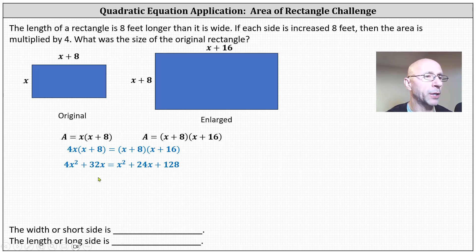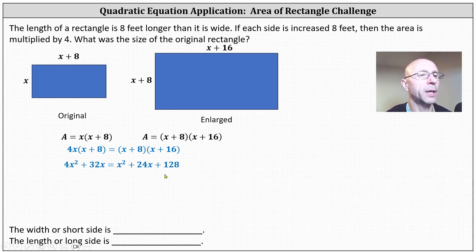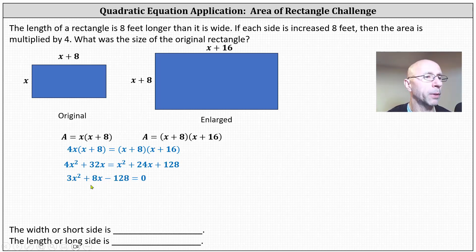Because we have a quadratic equation, let's go ahead and set it equal to zero. Because we prefer to have the x squared term positive, let's subtract x squared on both sides, subtract 24x on both sides, and subtract 128 on both sides. This gives us three x squared plus eight x minus 128 equals zero.